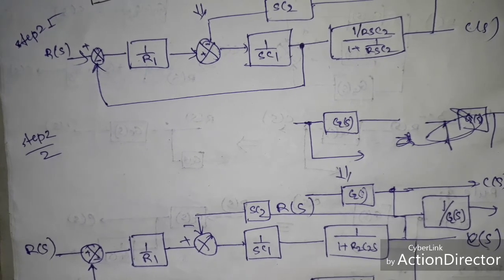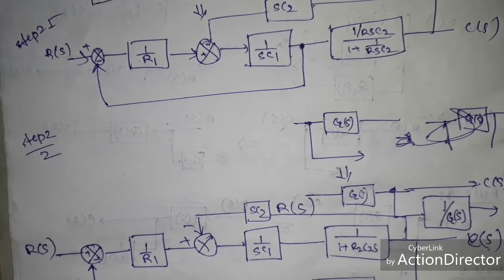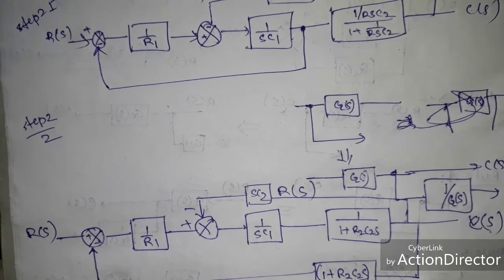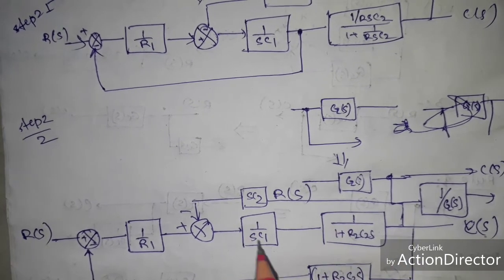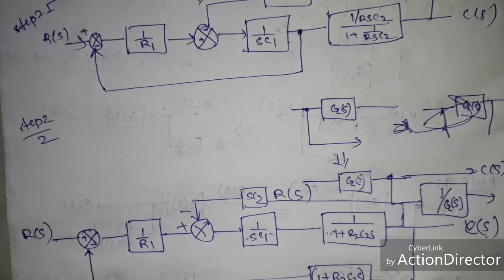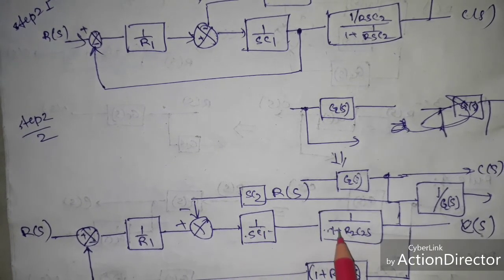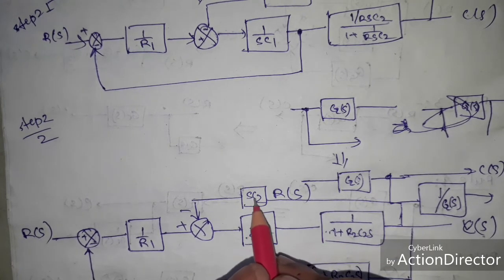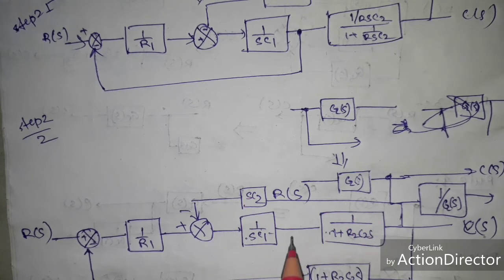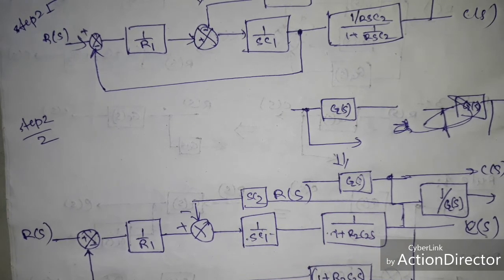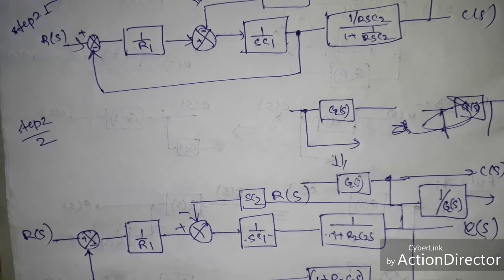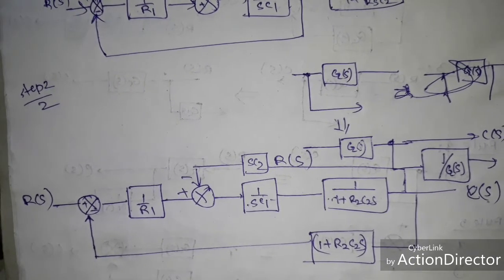We complete this part. After that, you see that these two blocks are in cascade, so this block and that block will be multiplied. Then you see that C2 will be in a negative feedback path, so this block can be represented as G(s) / (1 + G(s)·H(s)). In step two, we consider this part and write the equation directly.